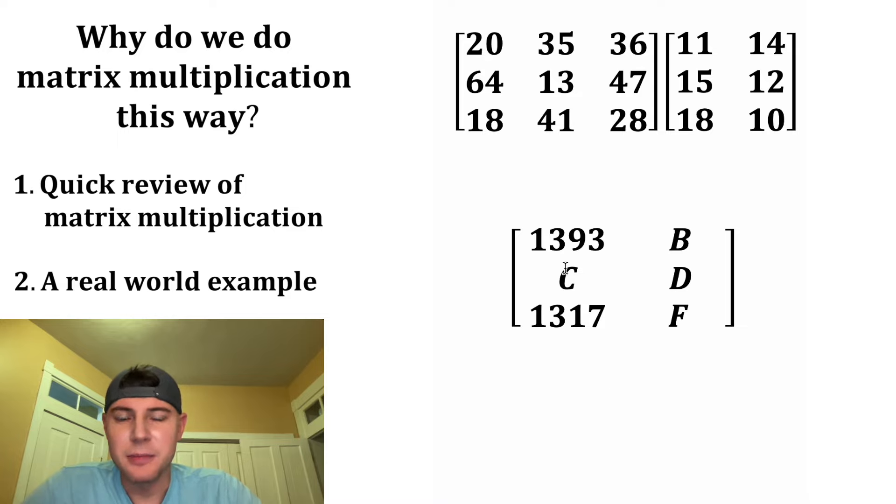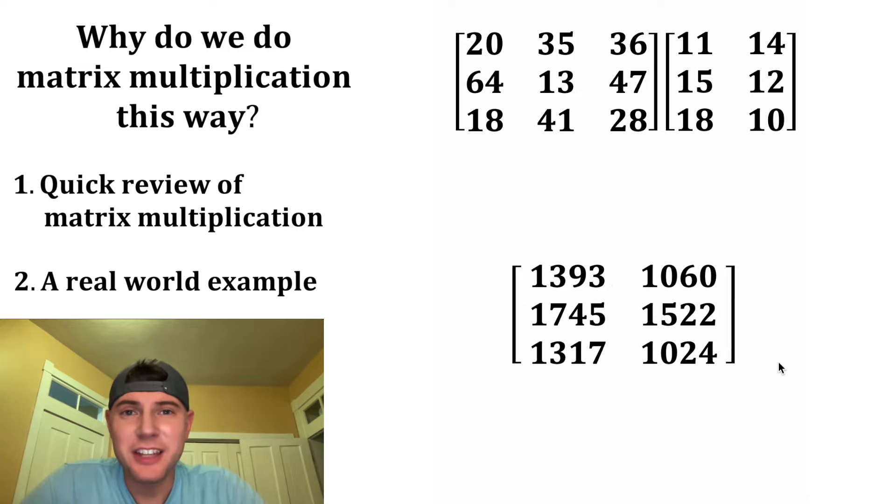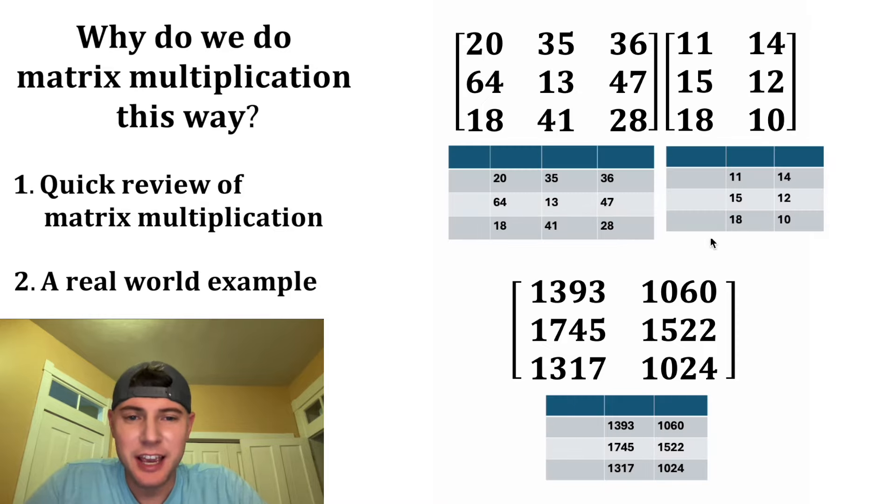And we can follow the same steps for these other unknowns. And these are the values we end up with. So why are we doing it this way? How can this make sense? Well, let's tie this into a real world example. We can think of each of these matrices as tables. So we have the exact same numbers, but I stuck them inside of a table.